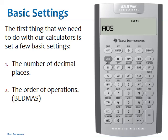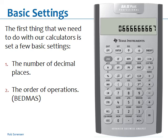Once we've got those two things set, we can press the Clear button twice to come back out. You'll notice the display now doesn't show any extra decimals. But if I go 2 divided by 4 I get 0.5. If I go 2 divided by 3 I get lots of decimals — 0.666666667 — so that gives me as many as the calculator can show in the display. Those two things are critical before we get going; it's going to save you a lot of grief down the road. Make sure you've got your calculator set up before you do anything else in the course.